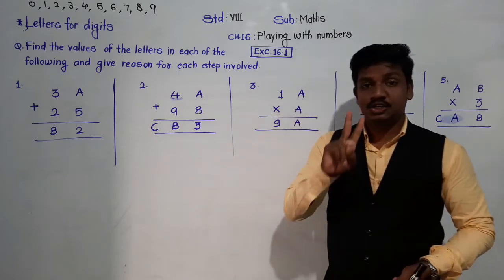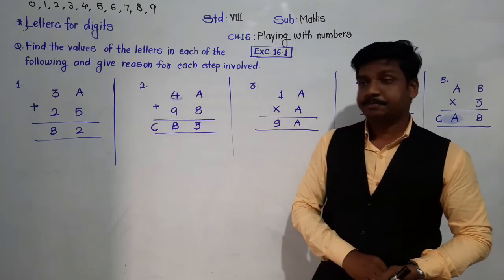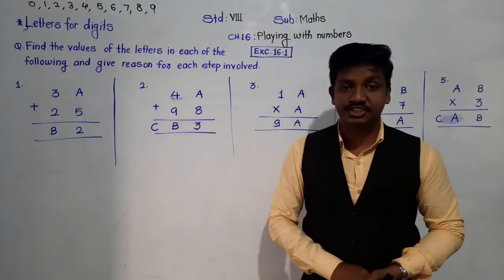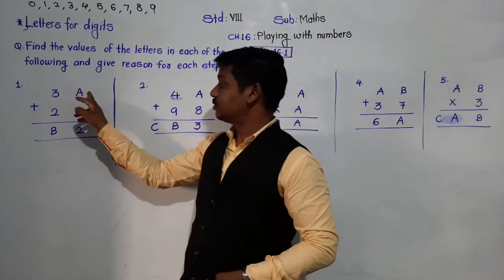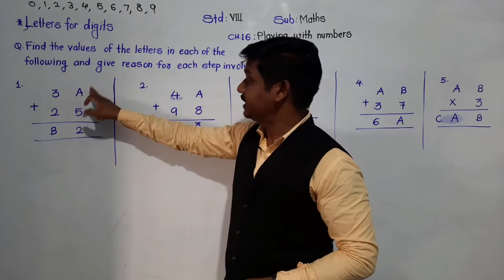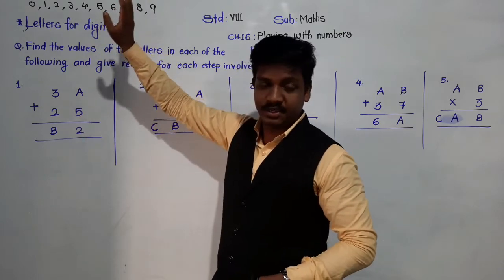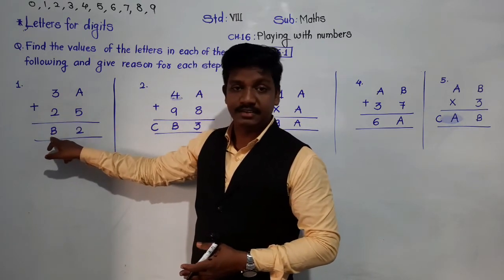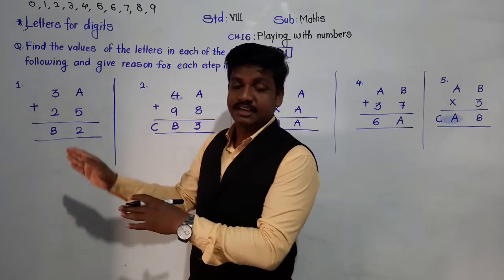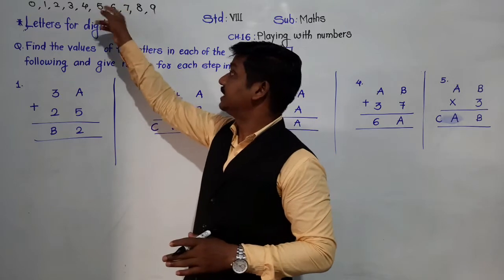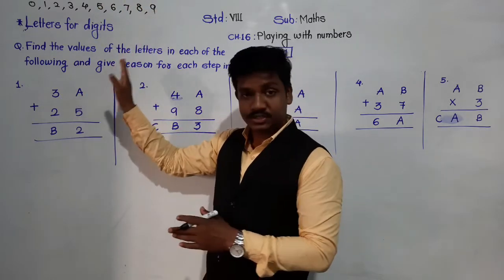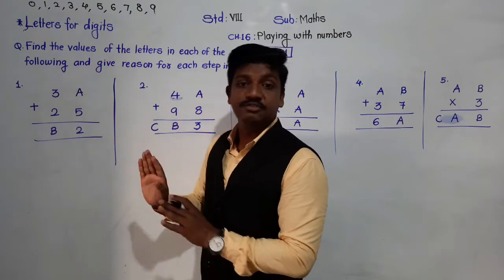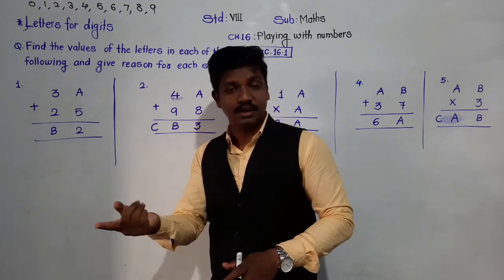Before solving these examples, there are two rules to keep in mind. Rule one: each alphabet or each letter stands for only one digit. For example, if A is standing for 6, then B will not stand for 6 again. B will stand for other digits than 6. One letter, one digit.